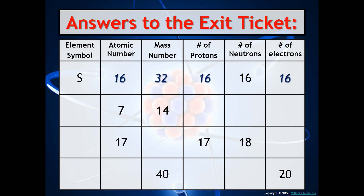In the next example, you have the atomic number given but no symbol. You find the symbol by locating atomic number 7 on the periodic table — that is nitrogen. The number of protons is 7, because atomic number always equals the number of protons. The number of neutrons is the mass number minus the number of protons. Because the atom is neutral, the number of electrons equals the number of protons.